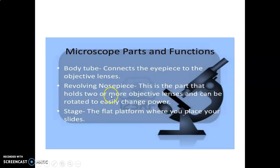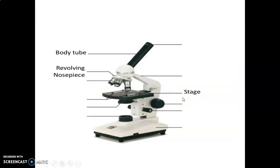The body tube connects the eyepiece to the objective lenses. It has a revolving nose piece, that is where the objective lenses are found, so you can rotate to change the power. There's a stage, which is a flat platform where slides are usually placed.